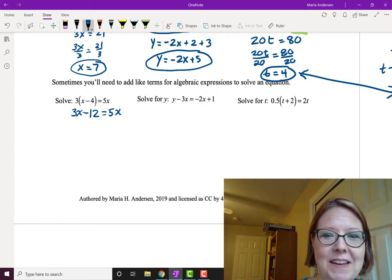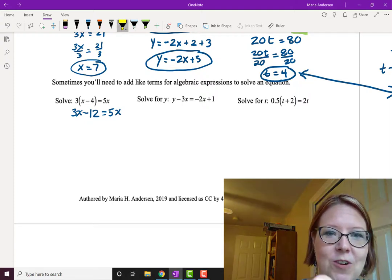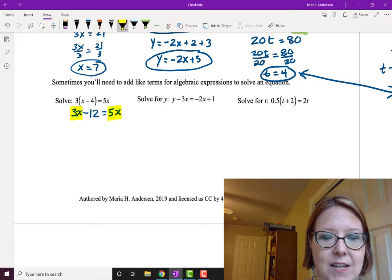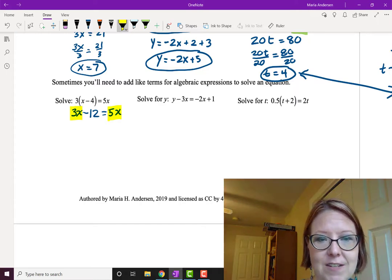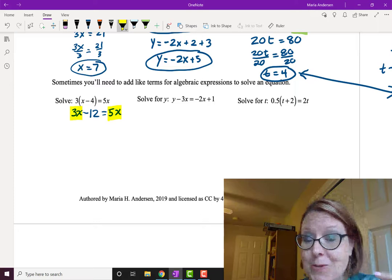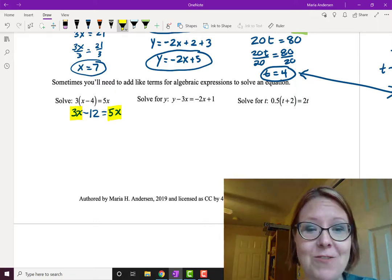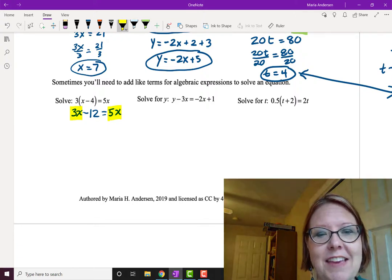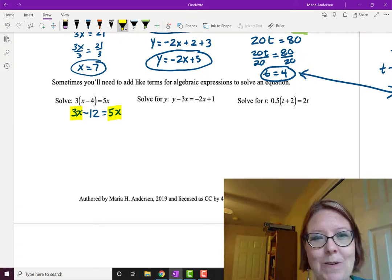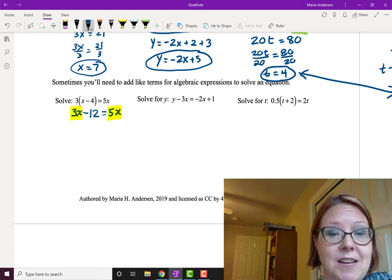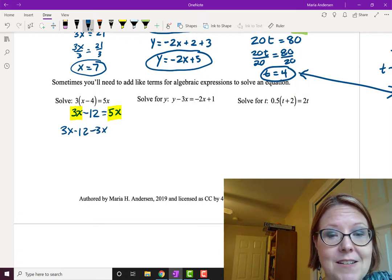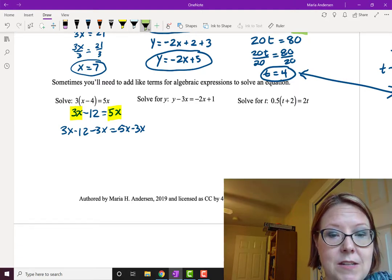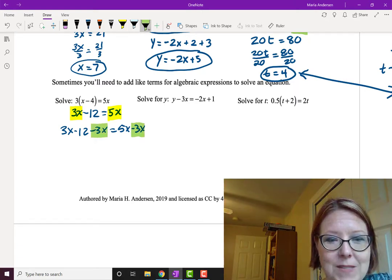All right, now we're being asked to solve this, so we're trying to isolate the x, but notice that we have x on both sides. We have a 3x on the left and a 5x on the right. I can subtract 3x from both sides, or I could subtract 5x from both sides, but one is going to be a little faster than the other, and that's if we do it so that the x is on a side by itself. So what I'm going to do is subtract 3x from both sides. So I'm going to do 3x minus 12 minus 3x and 5x minus 3x. So again, I'm doing the same thing to both sides.